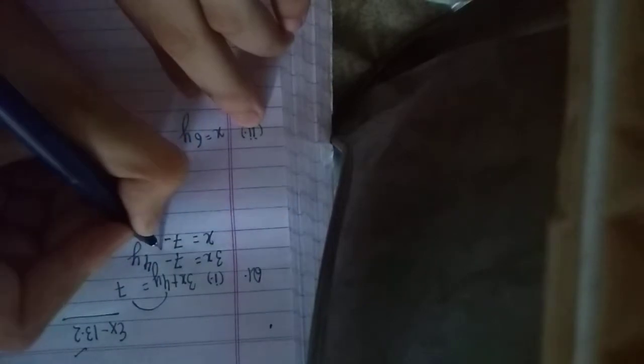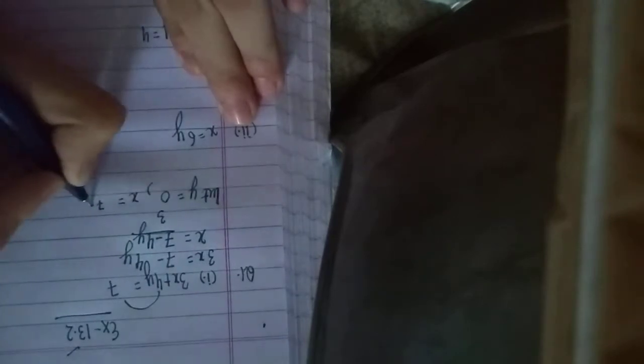So first, we will do 3x plus 4y equals 7. We rearrange: x equals 7 minus 4y divided by 3. This is how we will do this. If we put y equals 0, then we will do 7 minus 4 into 0 by 3. What will happen? 7 minus 0 upon 3 means 7 by 3.